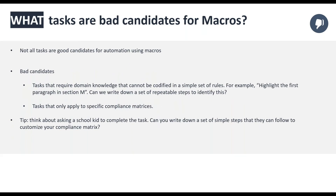What are bad candidates for automation? Tasks that require specific domain knowledge or knowledge that can't be codified in simple rules. For example, if you wish to highlight the first paragraph in section M of the compliance matrix output — can you write simple repeatable steps to identify that section, bearing in mind it may not be titled or formatted the same way in every RFP? If not, it's probably not a good candidate.